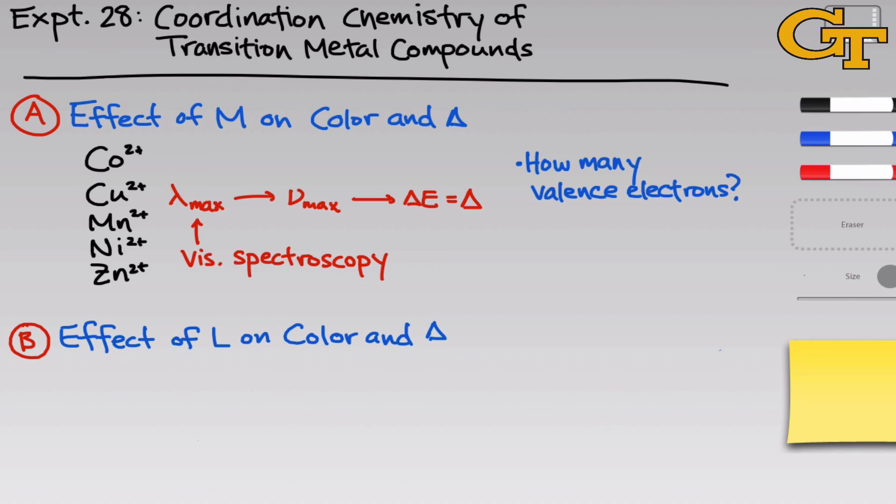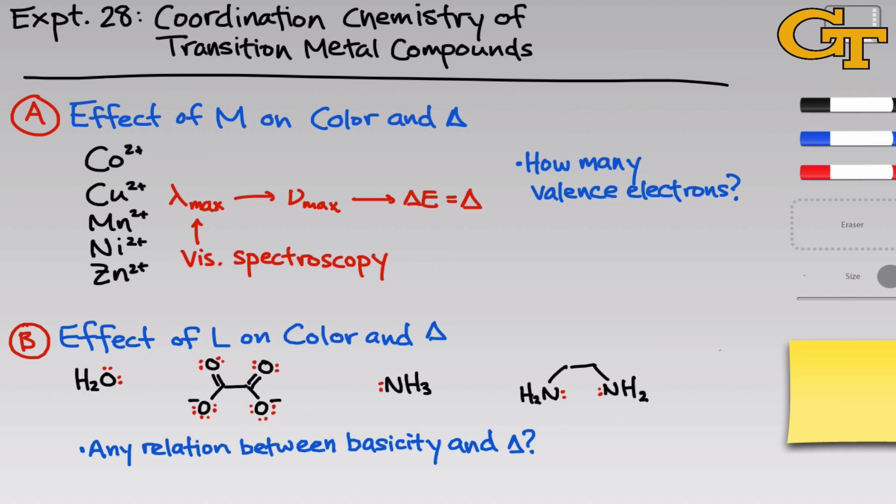In part B, we'll be looking at the effect of the ligand on the color and the delta splitting parameter. So we're going to be using the same metal throughout, and we'll be looking at four different ligands: water, oxalate ion, ammonia, and ethylenediamine. And something I want you to pay attention to here is the effect of the basicity of the ligand on the lambda max.